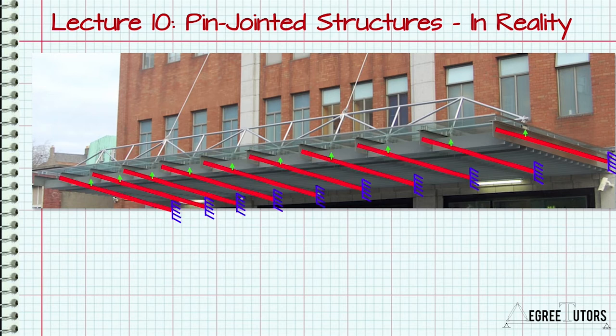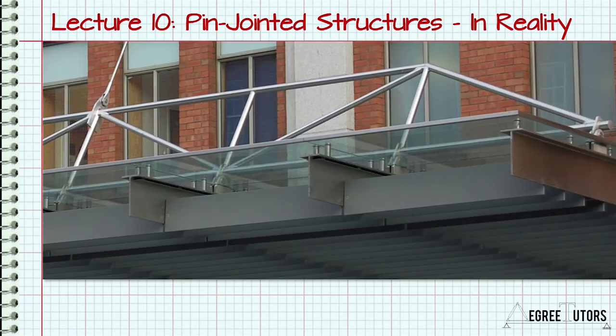As we know from Newton's third law, if the truss is supporting the beams by providing upwards pointing reaction forces, the beams must be applying equal and opposite downward pointing forces to the truss. The truss in turn is providing a force transmission route, allowing the weight of the canopy structure to be transmitted back to the two suspension cables which are themselves anchored back into the building's main structural frame.